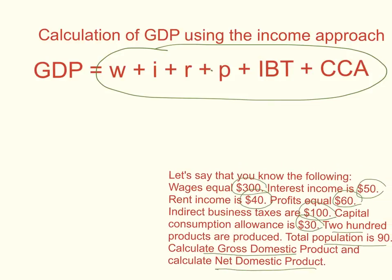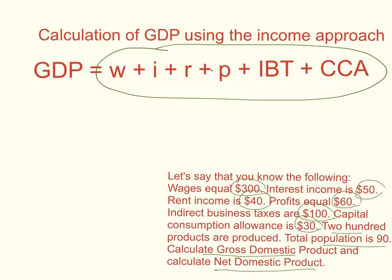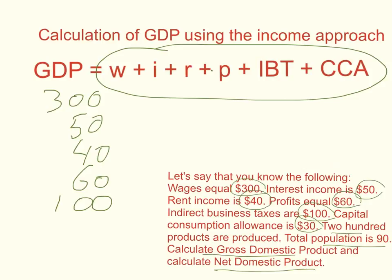Let's add up those six components to get GDP. Wages is $300, interest income is $50, rent is $40, profits is $60, indirect business taxes (IBT) is $100, and capital consumption allowance (CCA) — the same as depreciation — is $30. Adding them all up: $300 + $50 = $350, plus $40 = $390, plus $60 = $450, plus $100 = $550, plus $30 gives a total of $580. So GDP equals $580.